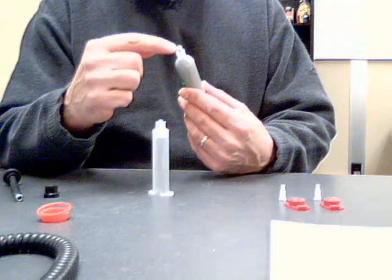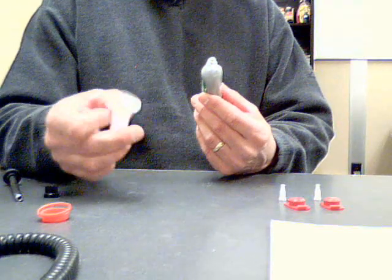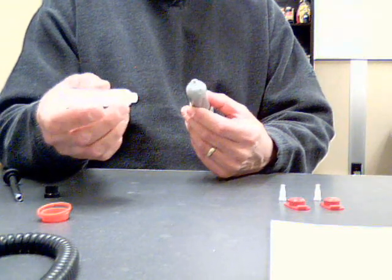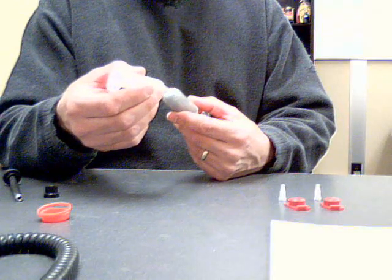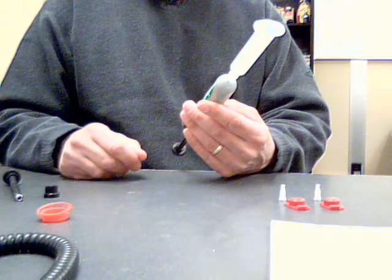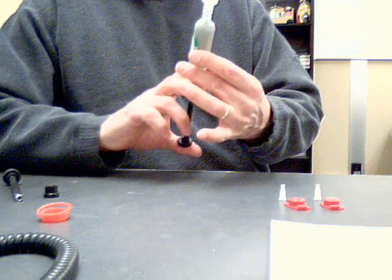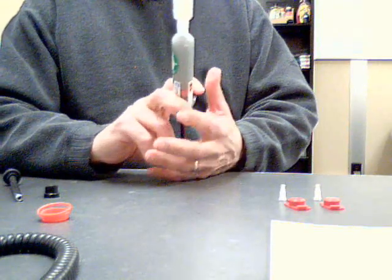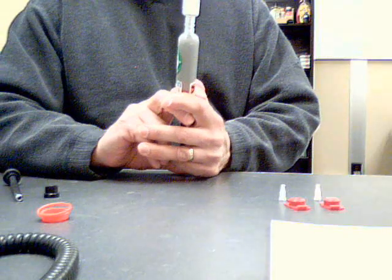Now my material is all the way up to the end of my connector here, and I'm ready to attach my syringe. I'm going to attach the syringe directly to the end, and now I should be able to dispense the material through the nose and into the piston.